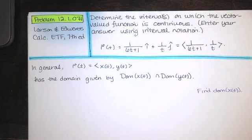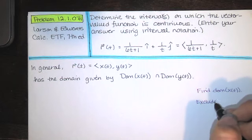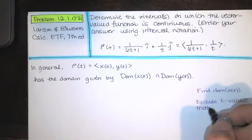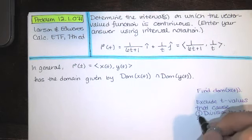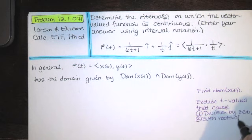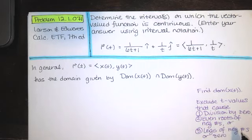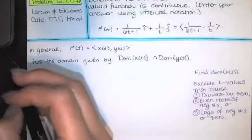Basically, we look for t values that won't work, and then we say that everything else will. So we'll say the domain consists of all real numbers t except for those that cause the following problems: we exclude t values that cause division by zero, even roots of negative numbers, and logarithms of negative numbers or zero. If a t value causes one of these problems, it can't be in the domain. The domain of x(t) will be any t values that don't cause these problems.